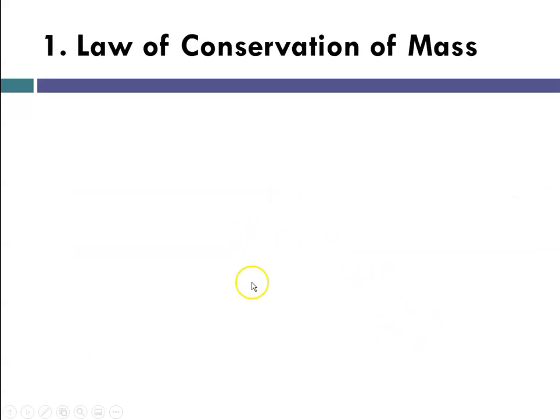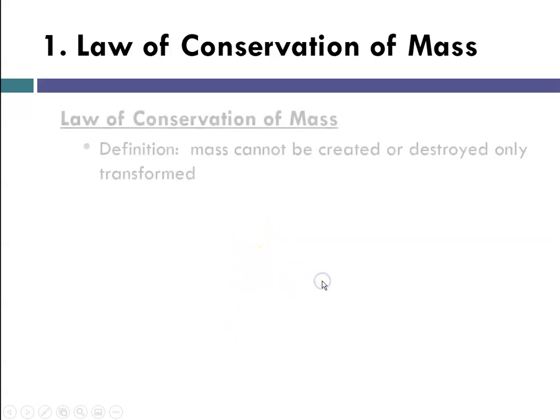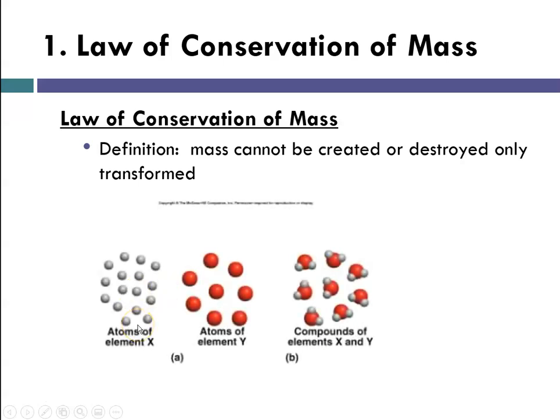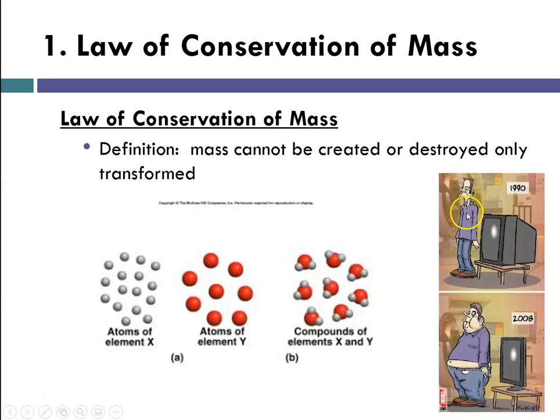The three laws we talked about: The first is the law of conservation of mass, which states that mass cannot be created or destroyed, only transformed. They knew that no matter what you did, you could always account for all of the mass in a process, whether it was physical or chemical. I like to show this picture that illustrates conservation of mass. In 1990, TVs were really big and the guy was really skinny, and then in 2008 the TV was really skinny and the guy was really big, so matter was conserved.